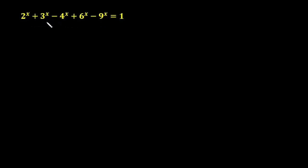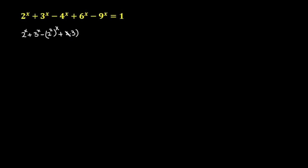When I see this whole equation, it is a sum of 2's and 3's. So 4 can be written as 2 raised to the power 2, 6 can be written as 2 times 3, and 9 can be written as 3 raised to the power 2. So let us rewrite our equation: 2 raised to the power x plus 3 raised to the power x minus (2 squared) raised to the power x plus (2 times 3) raised to the power x minus (3 squared) raised to the power x is equal to 1.